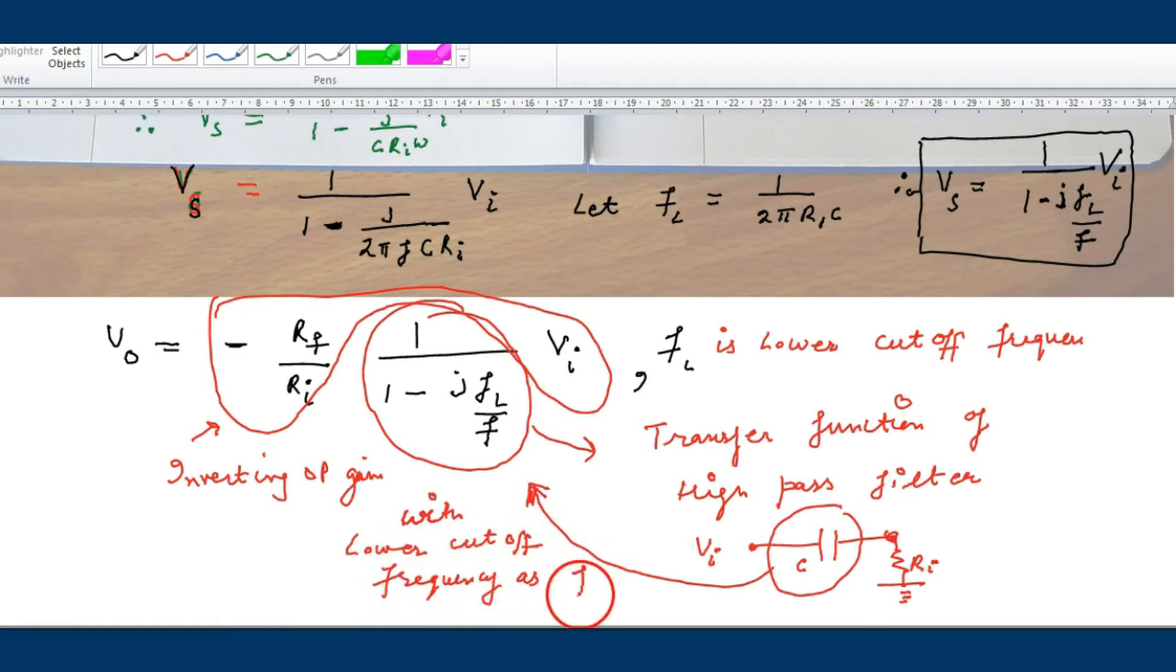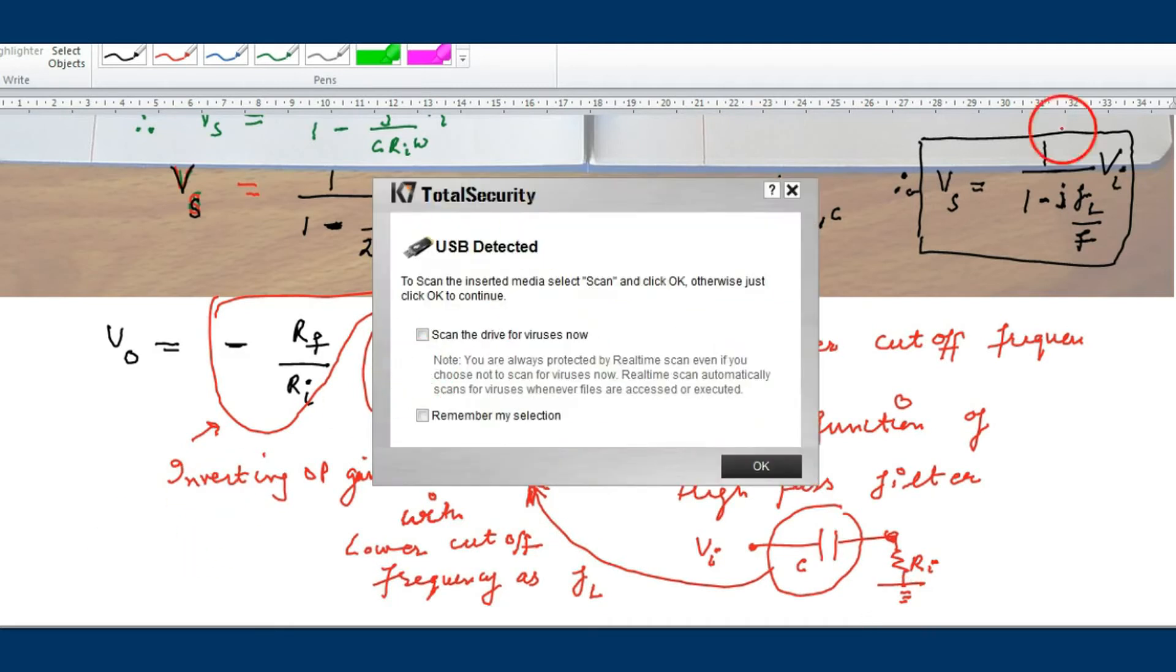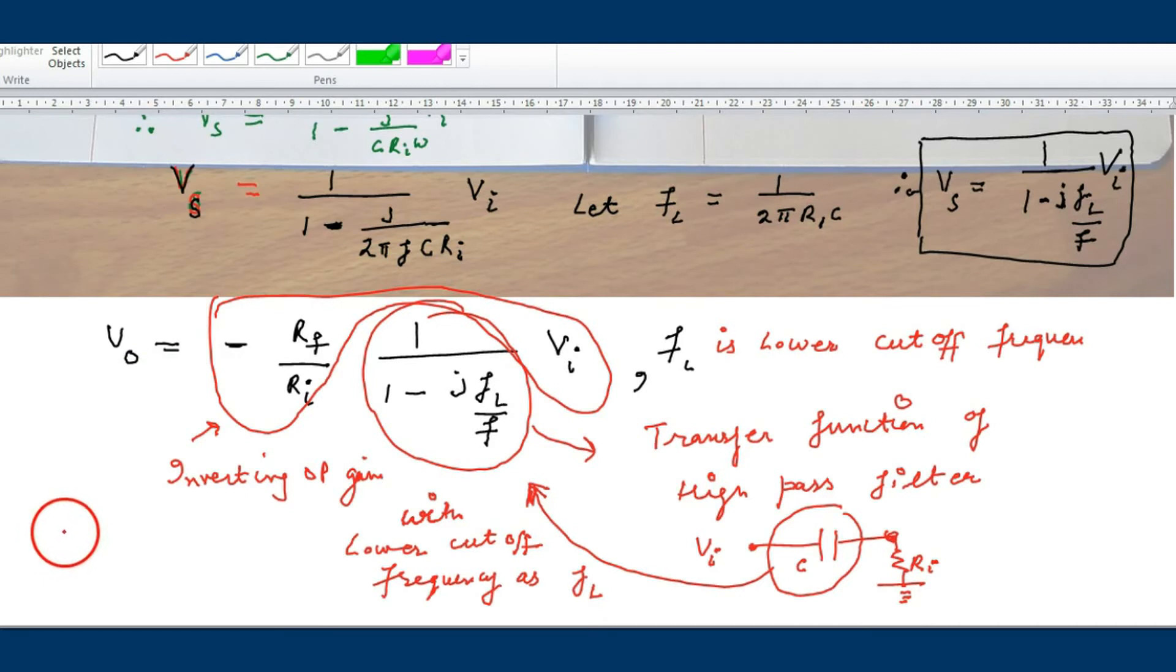Where fl is the lower cutoff frequency. The amplifier will pass all the frequencies higher than fl. fl is the lower cutoff frequency. This is the base value. From above, all frequency will pass, but below, no frequency can amplify. Above it is okay, but below, not.